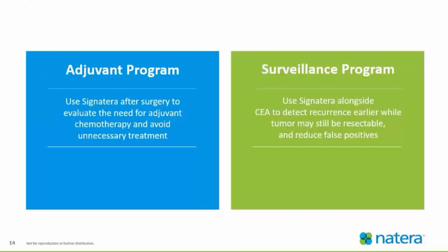The adjuvant program is designed to evaluate the need for adjuvant chemotherapy and avoid unnecessary treatment post-surgery, whereas the surveillance program is designed to use Signatera along with CEA to detect recurrence earlier so that a tumor may be resected, or to avoid false positives. We're going to look at a case study next.